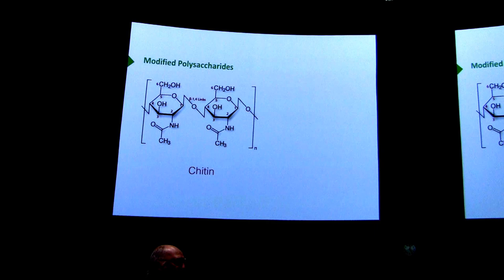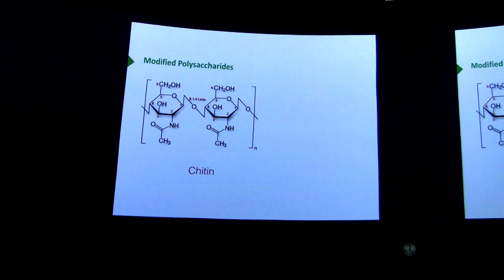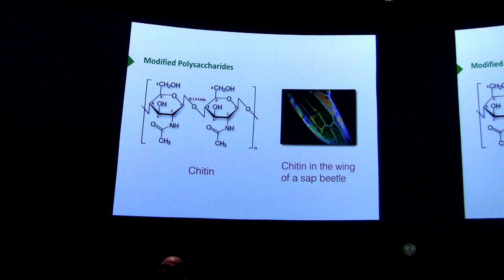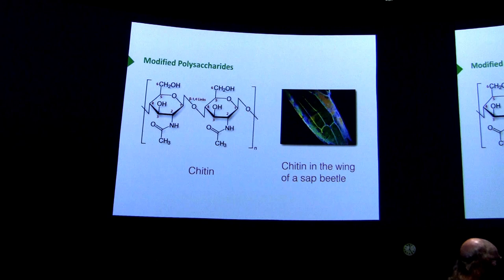There are polysaccharides with modified sugars. One is chitin. It has beta-1,4 linkages, but the monomeric sugar is not glucose — it's N-acetylglucosamine. You can see the N and the acetyl group on the very bottom of that molecule. Chitin is what you find in the exoskeleton of insects — here's chitin in the wing of a sap beetle, providing structural integrity. I didn't mention that about cellulose with respect to plants, but that's what cellulose does in plants: it gives structural integrity to plant cells. Plants have great structural integrity coming from the cellulose they contain.